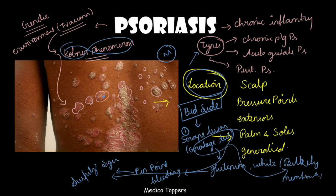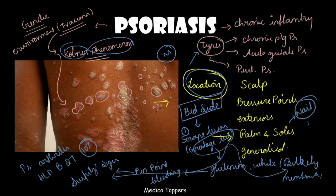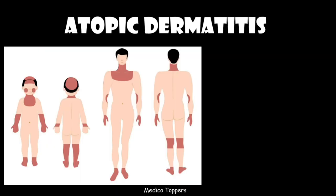Psoriasis is associated with psoriatic arthritis, which comes under seronegative spondyloarthropathy and is HLA-B27 associated. Around 10% of people with psoriasis may develop psoriatic arthritis, which has its own X-ray manifestations. On nail examination in psoriasis we can see thimble pitting, which is a pathognomonic feature. So psoriasis can be diagnosed based on morphology, location, bedside examination, and nail examination.